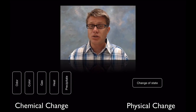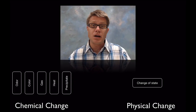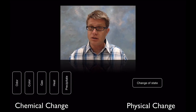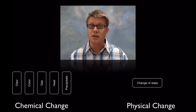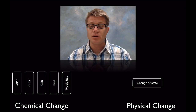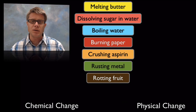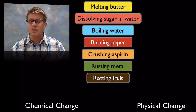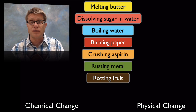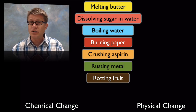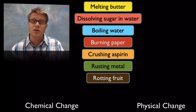So again, for chemical change, our evidence is: if we see an increase in gas, odor, heat, color, or a precipitate, we know a chemical change has occurred. But if it's simply a change of state, it's physical. You may want to pause the video at this point and try to figure out which of the following examples are going to be chemical changes and which are going to be physical changes.